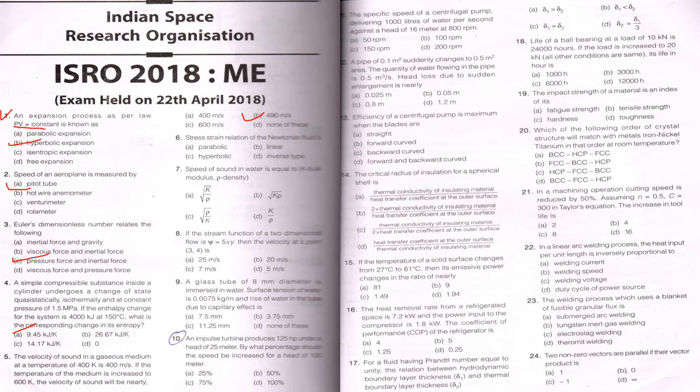Stress system relationship for Newtonian fluids, sixth answer P linear. Speed of sound in water is equal to following modulus K, correct answer A. K by rho.